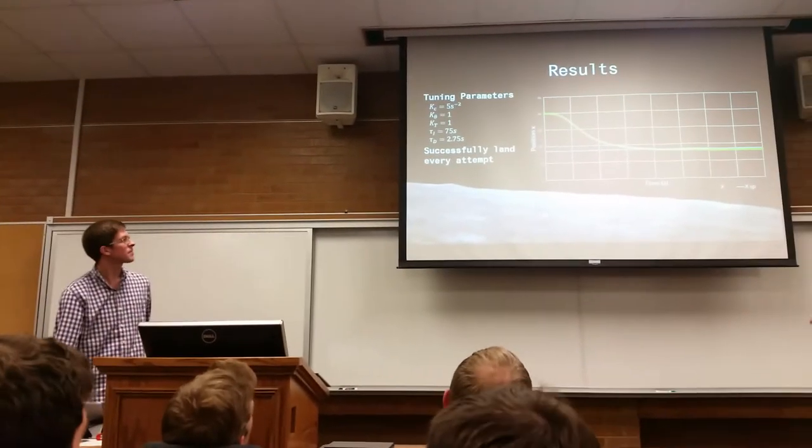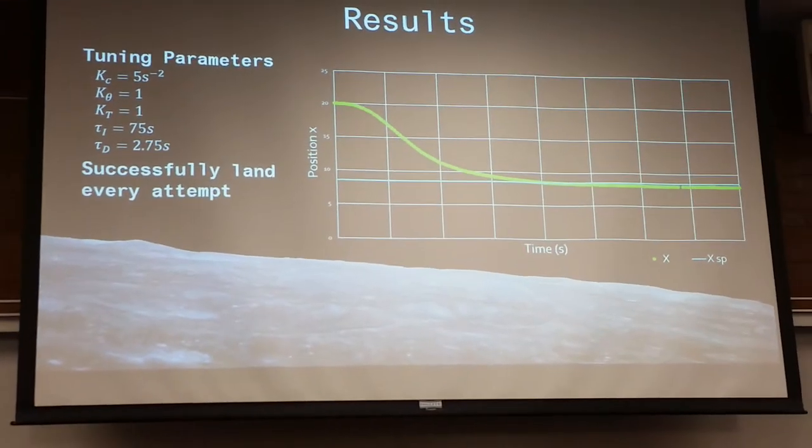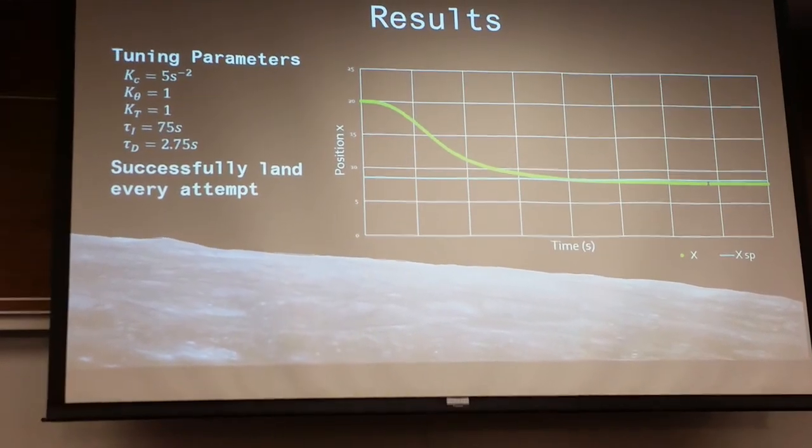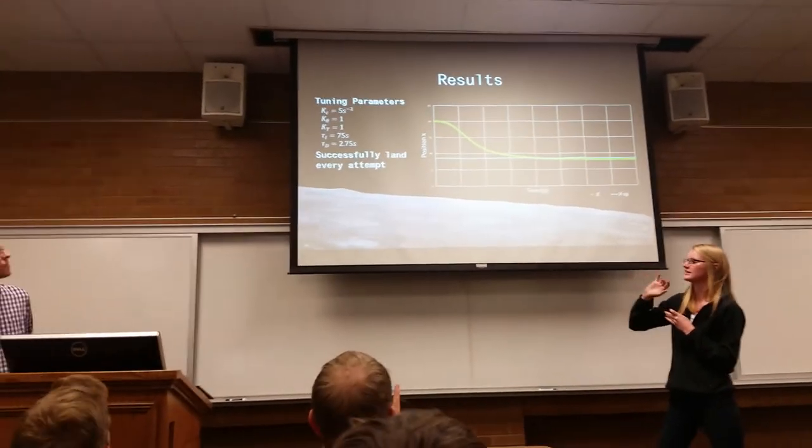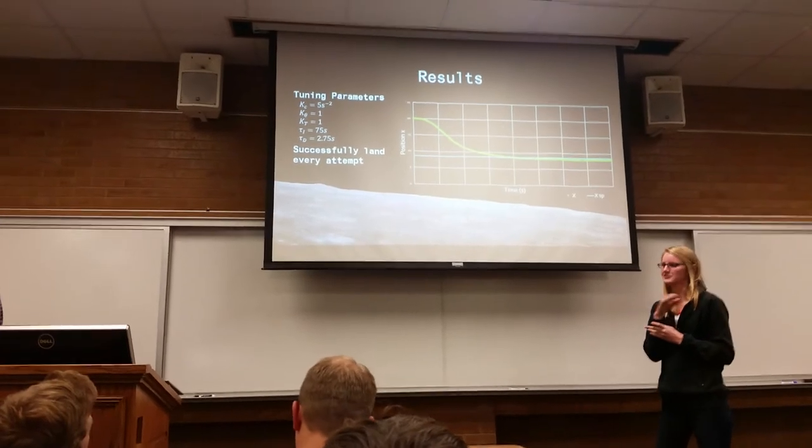So to tune it, we didn't really have a process equation, so we just kind of did rudimentary. We made our tau_i really big so that the integral didn't really affect it, and then our tau_d was small. And we adjusted our k, our gain value, to 50, until we got the timing to be kind of where we wanted to be.